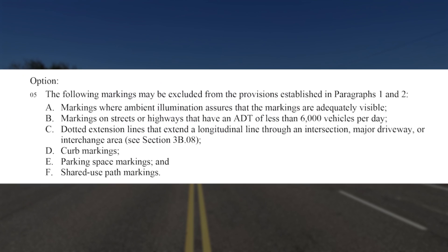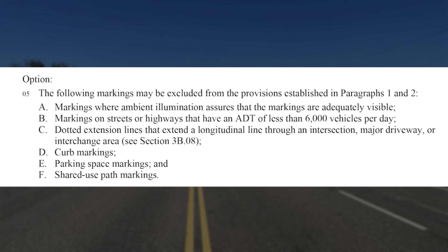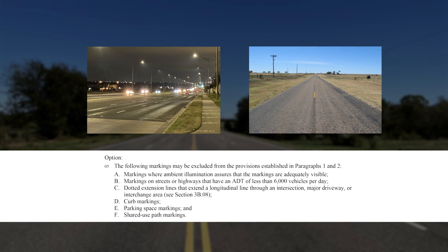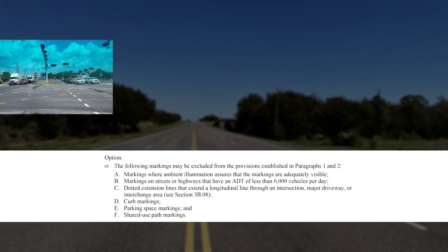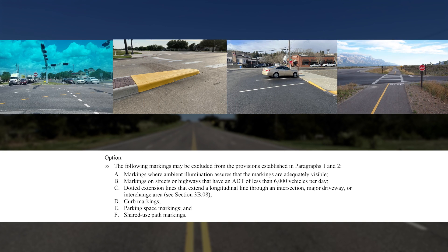Both the standard and guidance statements in the MUTCD reference paragraph 5 as an exception. Paragraph 5 establishes an option for longitudinal markings that may be excluded from the provisions in the standard and guidance statements. Knowing which sections of the roadway are illuminated and what the traffic volumes are on your roadways will help you determine if you want to limit your method to certain roadways. On those roadways included in your method, you also have the flexibility whether to include dotted extension lines, curb markings, parking space markings, and shared use path markings.